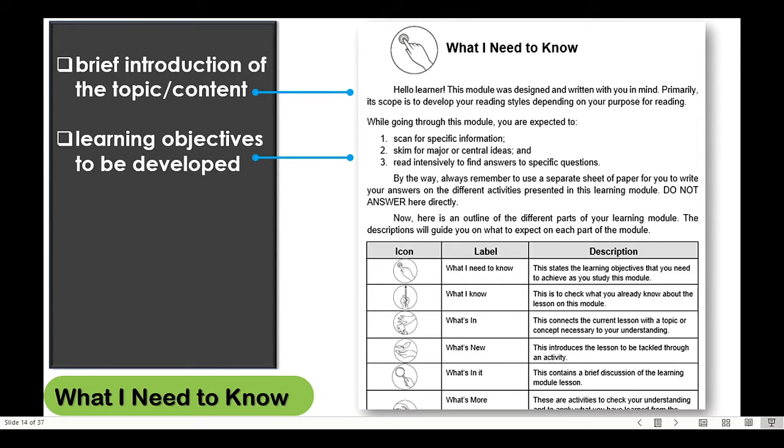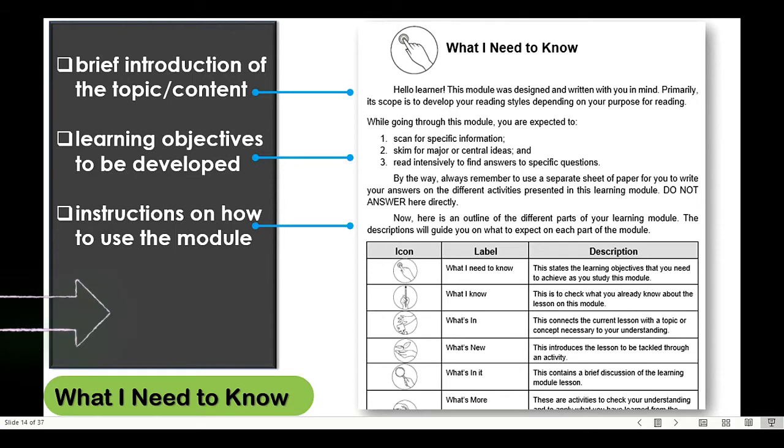Moreover, instructions on how to go about the module should also be recorded. Like what is seen on the example, the learner is instructed to use a separate answer sheet. Furthermore, placed on a table are the labels partnered with their icons and short descriptions for the student to have an overview on what to expect on the different sections.